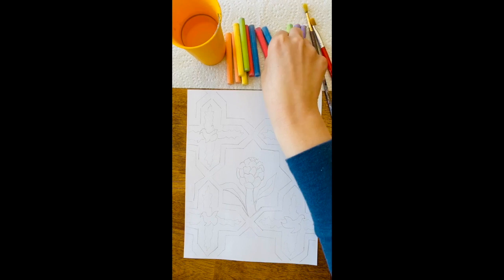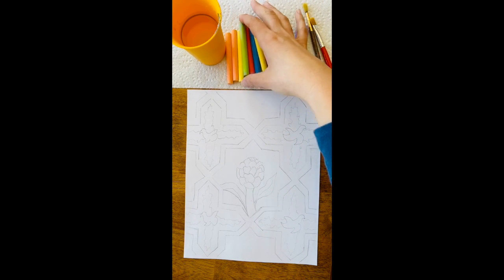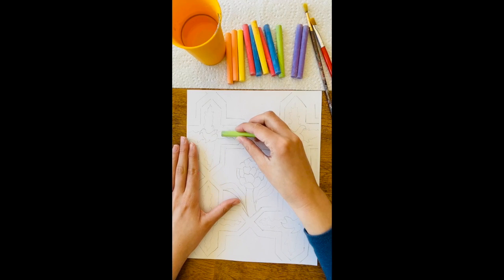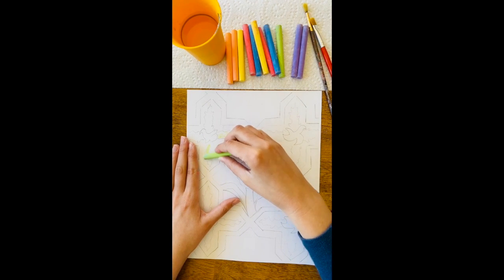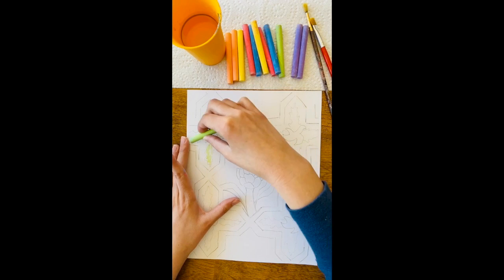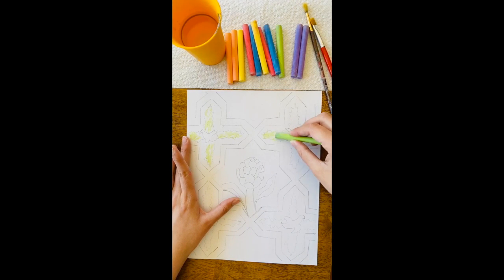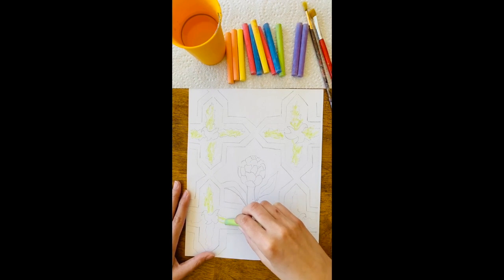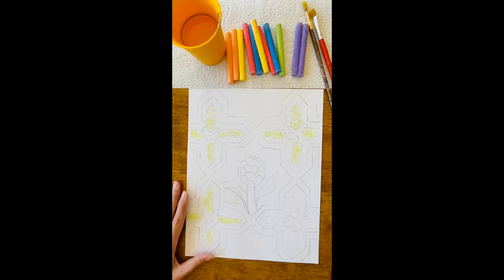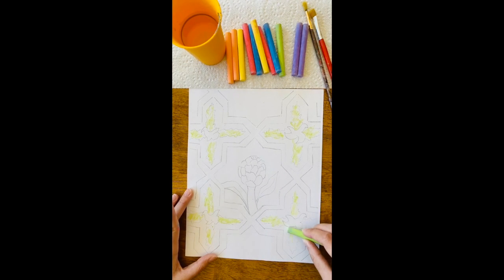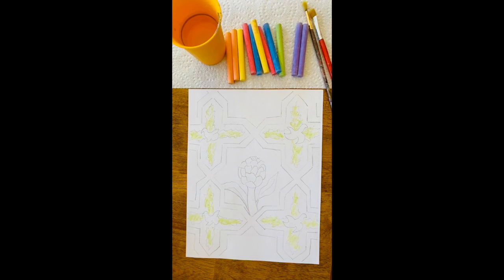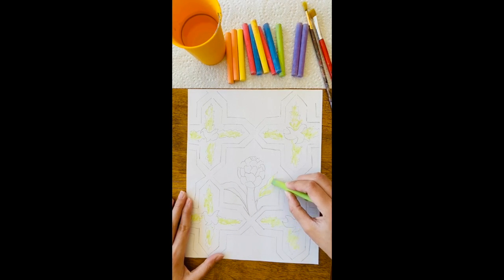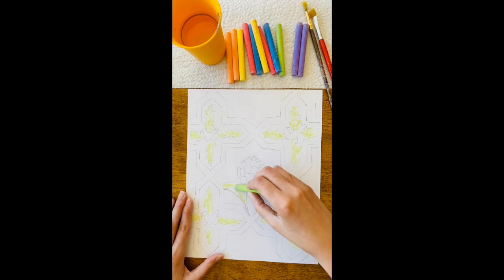So just a really light touch is all you need, and I'm filling in all the greenery areas inside of those T shapes. And I'm also going to fill in the leaves and a little bit of the stem of the artichoke.